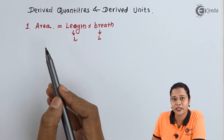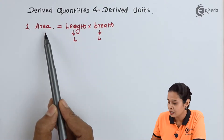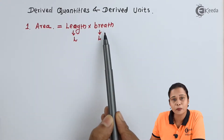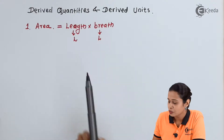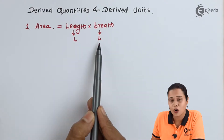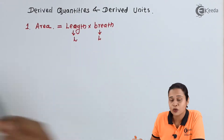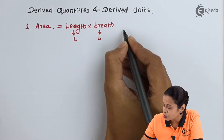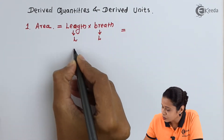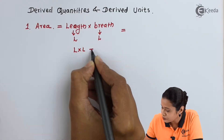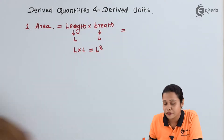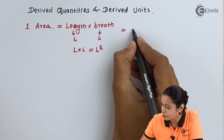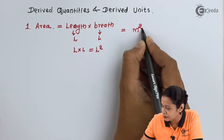The first quantity we will study is area. We know the formula of area is length into breadth. We will define breadth also in terms of length. The unit of length is meter, so we have length into length, that is length squared. Hence the unit of area is meter square.